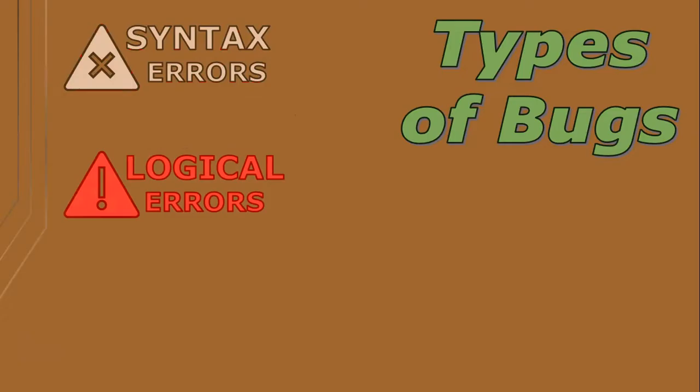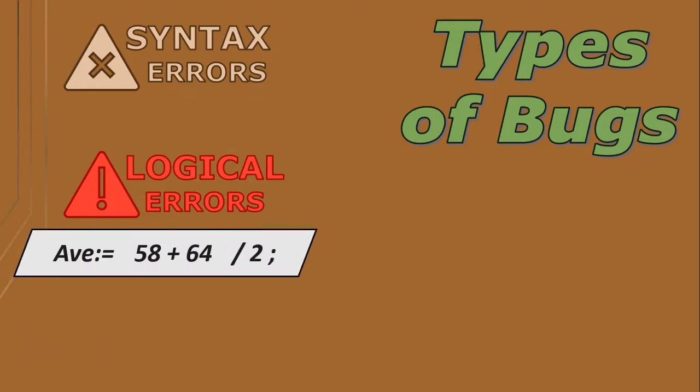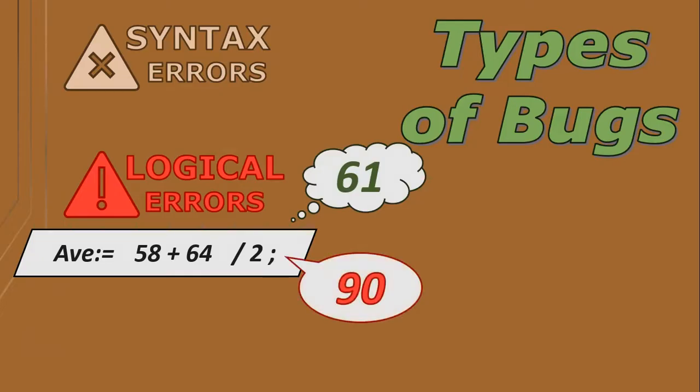Logical errors are flaws in the program's logic that cause it to produce incorrect results or behave unexpectedly. For example, a calculation for an average of two numbers could be: number one plus number two divided by two. In this case we expect the result to be 61, but we get 90 instead — this is because of bad maths.